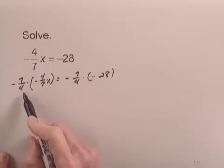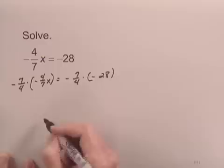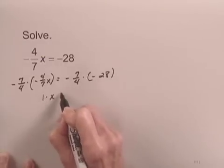Negative 7 fourths times negative 4 sevenths equals 1, so I have 1 times x on the left-hand side.